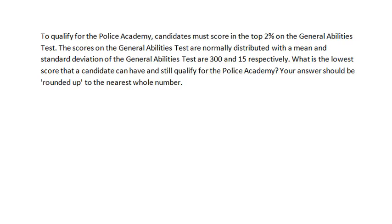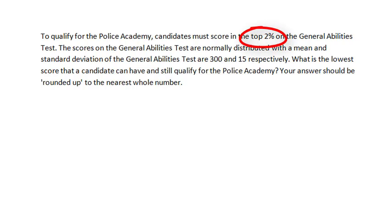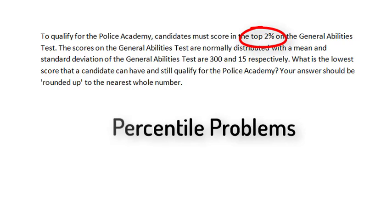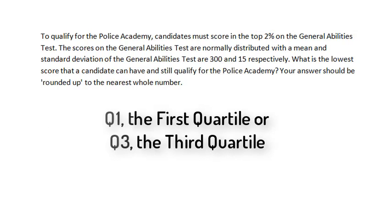One of the biggest challenges in this statistics course is figuring out what kind of problem you are dealing with when presented with a word problem like this one. However, there are some key words in most problems like this one that will help you decide. We are told that the distribution is normally distributed, which gives us the idea that this problem has something to do with a normal distribution. We also see that we are given a percent — namely the top 2%. In an overwhelming majority of cases, problems in which you are given a percent are percentile problems. But be aware that problems in which quartiles are given are also usually percentile problems.